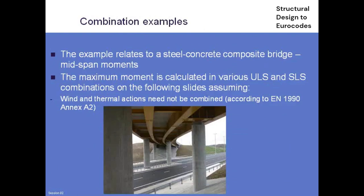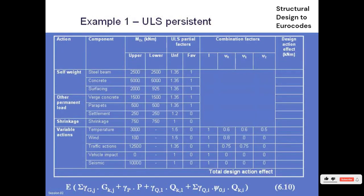To finish, a quick worked example of how it all works in practice. This is a typical steel composite bridge — chosen just because it has lots of actions to combine. The purpose is determining the maximum bending moment at some point in the span. First, an engineer works out all the different types of action — under self-weight: steel self-weight, concrete, surfacing; other permanent loads like verge, parapets, settlement, and shrinkage. Variable actions: temperature, wind, traffic, vehicle impact, and seismic. You go to Eurocode 1, calculate all those actions, analyze for each, and work out the characteristic bending moment for each — for example, applying the wind force from Eurocode 1 gives the characteristic bending moment M_Ek.